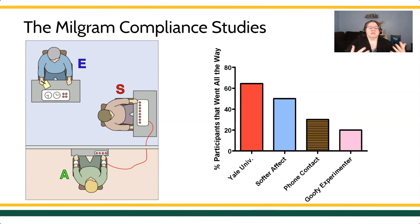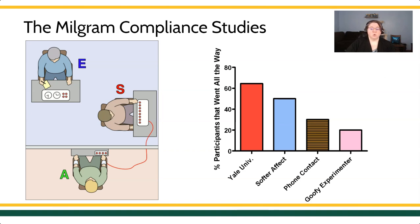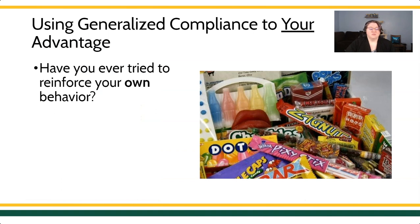The Milgram study is a perfect example of compliance and the generalization of our rule-following behavior. We see that generalization was more likely to occur under certain stimulus circumstances. It's also kind of difficult to follow your own rules, and especially difficult to try to reinforce your own behavior.